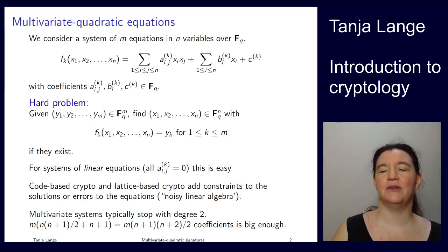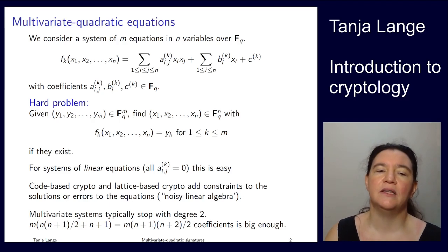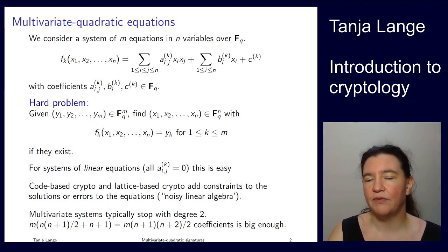You might go like, wait a second, she now says it's easy. But aren't the code-based and lattice-based systems that we've been seeing in this course based on something very similar? Like you have a right-hand side, say, a Niederreiter system, you have the syndrome, you have the ciphertext, and you're asking for a vector x, such that you're getting this right-hand side. And this sounds exactly like the problem.